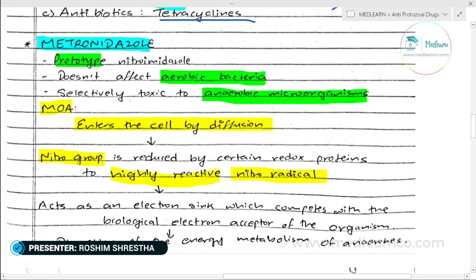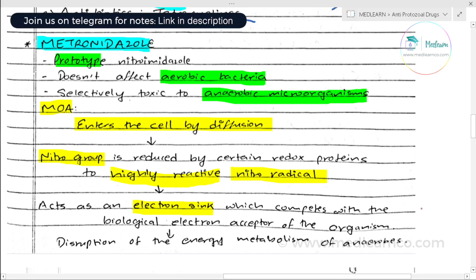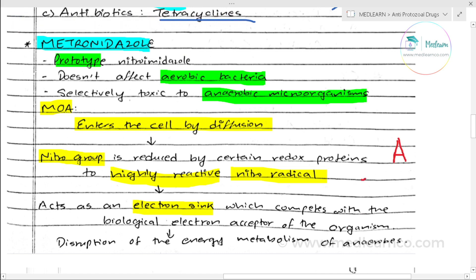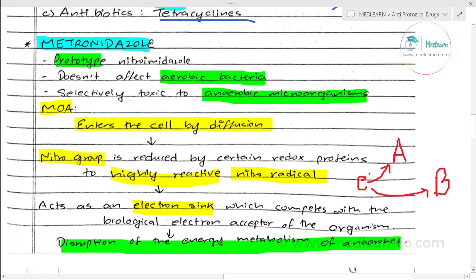These nitro radicals act as electron acceptors. Normally, the parasite produces electrons in the electron transport chain. The nitro radicals accept these electrons and disrupt the process, which is how metronidazole works to kill the anaerobic organism.